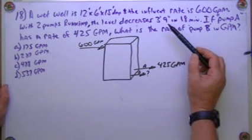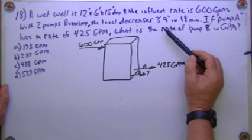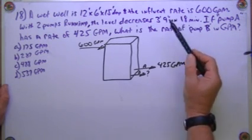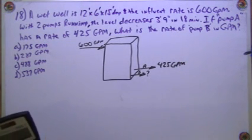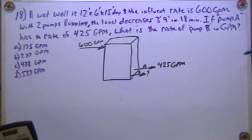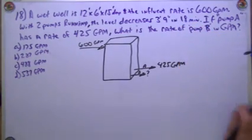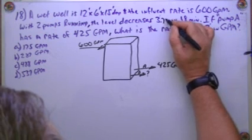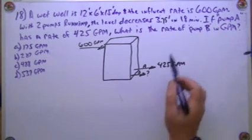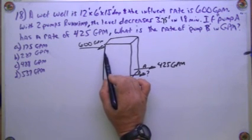Both pumps running, the level decreases 3.9 feet or 3 feet 9 inches. Let's simplify that. 9 divided by 12 should be 0.75, so it's going to be 3.75 feet in 18 minutes. So there's our depth.